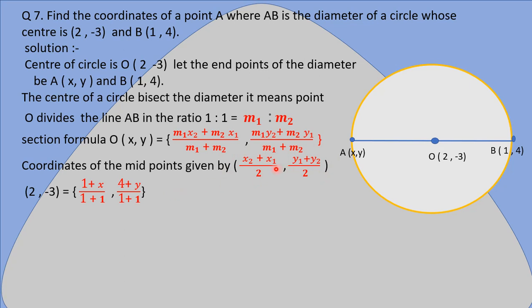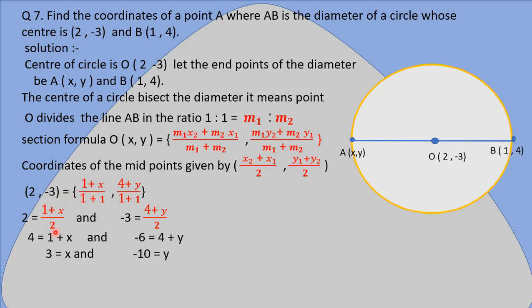Putting the values — the center O is (2, -3), B is (1, 4), and A is (x, y) — into the midpoint formula: (2, -3) = ((1 + x)/2, (4 + y)/2). Equating the x-coordinates: 2 = (1 + x)/2, and equating the y-coordinates: -3 = (4 + y)/2.